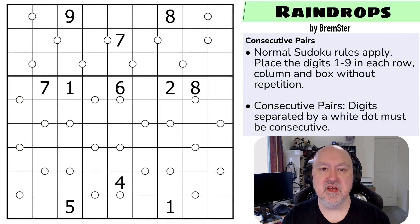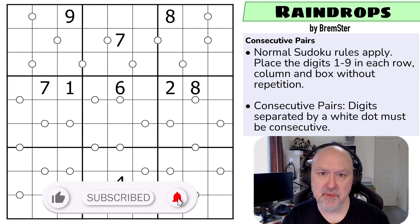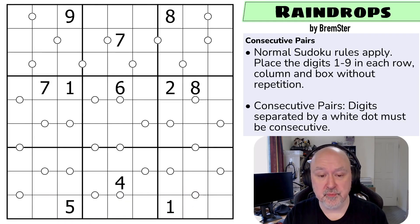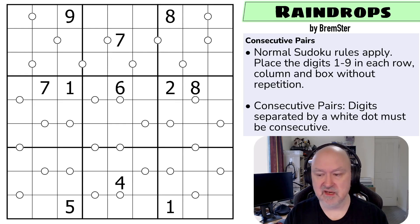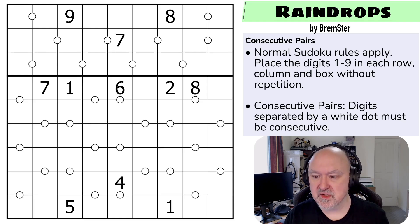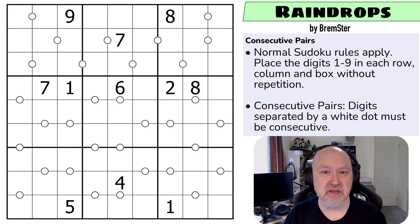Hi and welcome to Bremster Puzzles. I'm back to the Sudoku-tude set of puzzles, and this time we're looking at a consecutive pairs puzzle called Raindrops. Consecutive pairs — we'll go through the rules — being a subset of the kropki pairs rule set where we're just using consecutive dots, meaning that not all dots are given. There'll be a link below to where you can try this puzzle yourself, as well as a link to the Sudoku-tudes playlist.